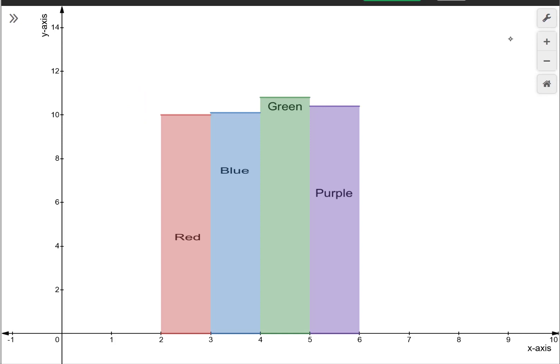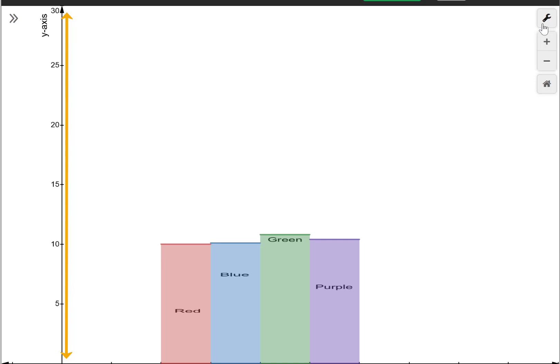Notice that if I change the scale on my y-axis from 0 to, say, 30, that makes the variety in the data look even lower. It doesn't look like the values of red, blue, green, and purple have much variety. They all look pretty similar.